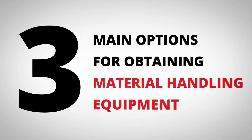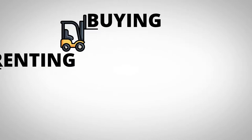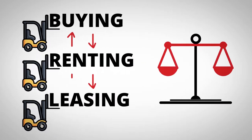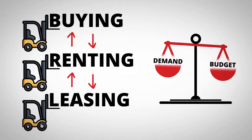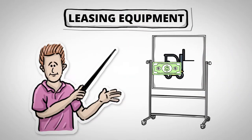There are three main options for obtaining material handling equipment: buying, renting, and leasing. These methods can be intermingled to balance demand and budget availability as needed. Leasing equipment, much like leasing a car, provides a steady expense over time with the requirement of a contract.